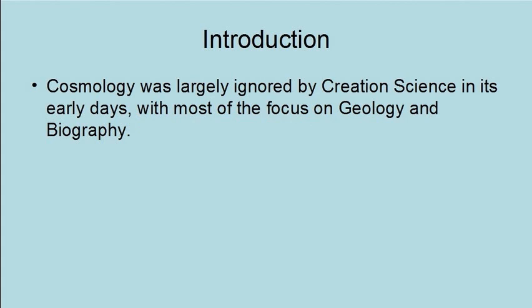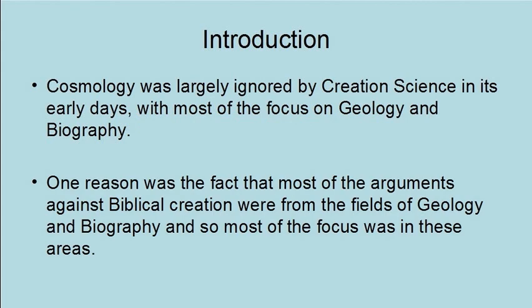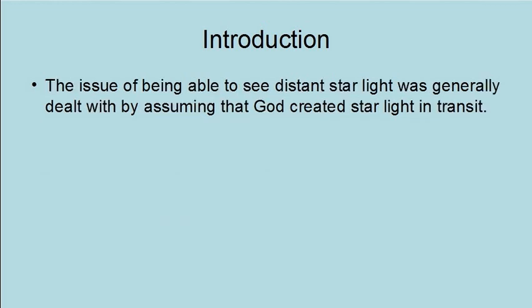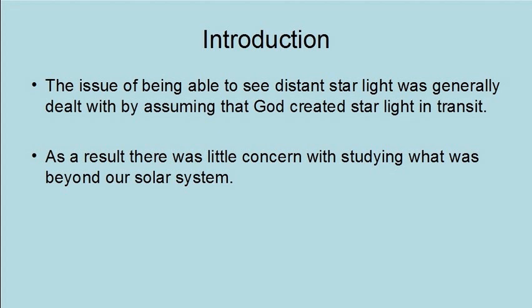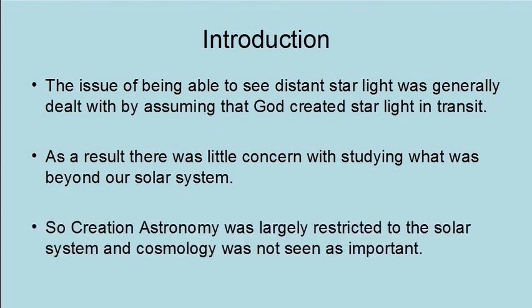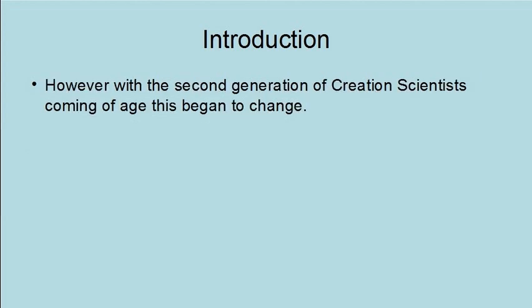Cosmology was largely ignored by creation science in its early days, with most of the focus on geology and biology. One reason was the fact that most of the arguments against biblical creation were from the fields of geology and biology, and so most of the focus was in these areas. The issue of being able to see distant starlight was generally dealt with by assuming that God created starlight in transit. As a result, there was little concern with studying what was beyond our solar system, so creation astronomy was largely restricted to the solar system, and cosmology was not seen as important. However, with the second generation of creation scientists coming of age, this began to change.